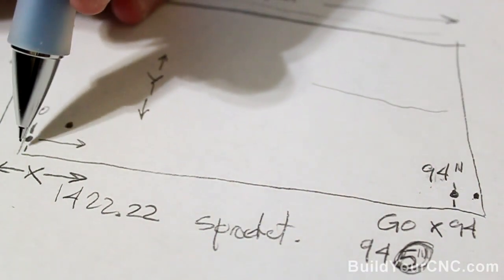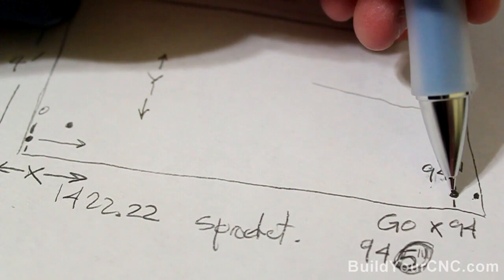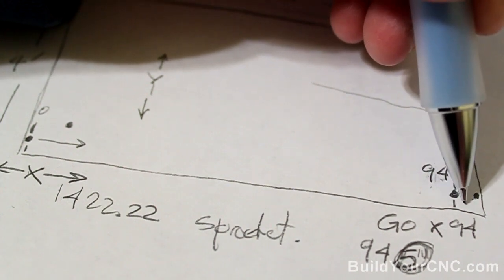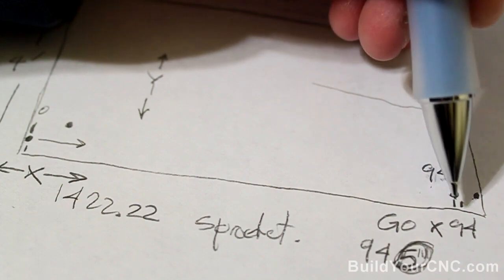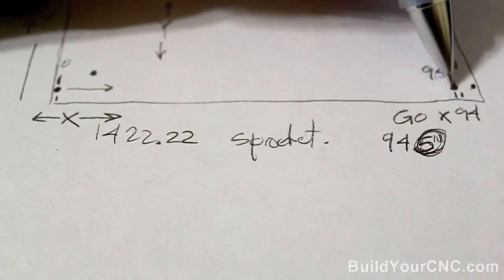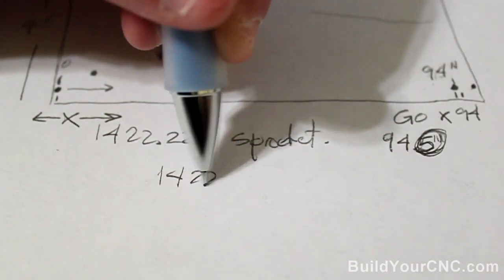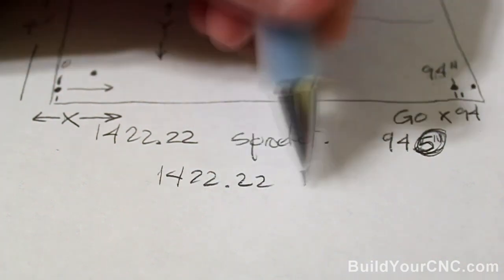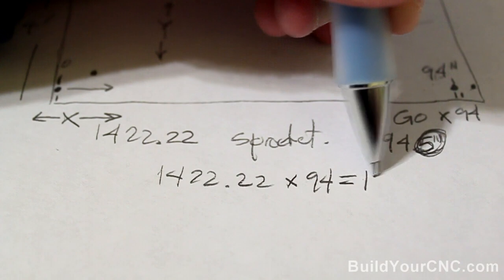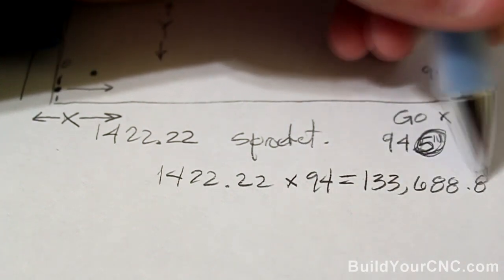We need to know how many steps it took to get from here all the way to here. And to get really close to the actual, we're going to add a half of an inch worth of steps here in software. So how many steps did it take to get all the way from here to the theoretical 94 inches? Well that's 1422.22 times 94. So this gives us 133,688.8 repeating.